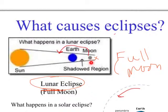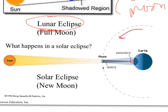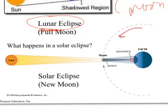Okay, that is a lunar eclipse. Solar eclipse, then, happens where we can't see the sun.